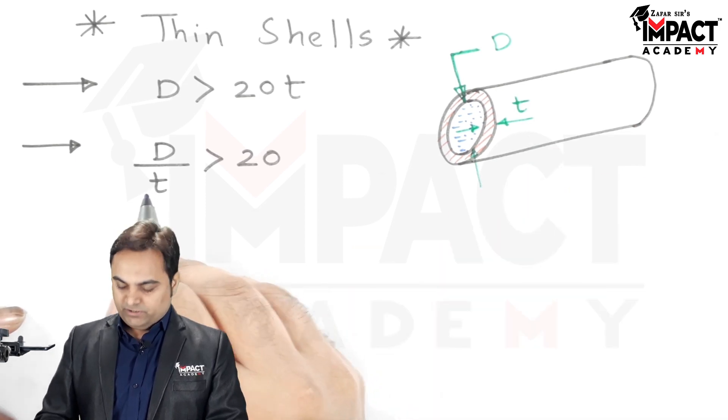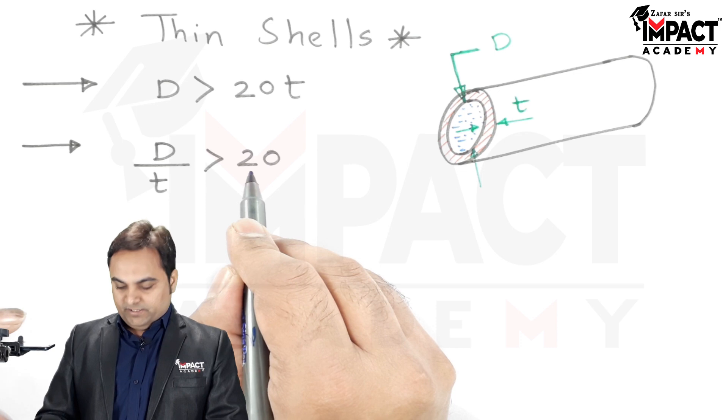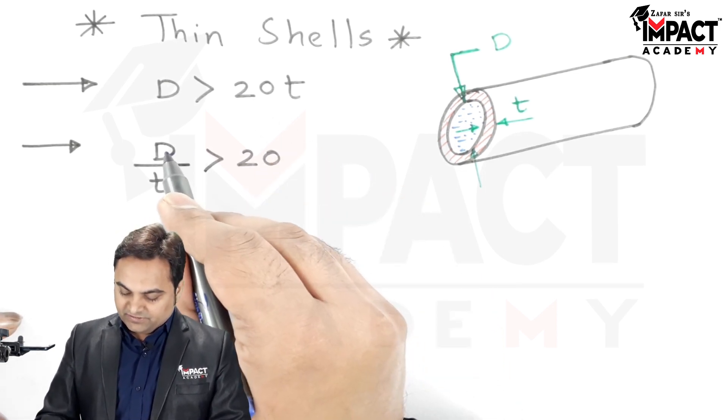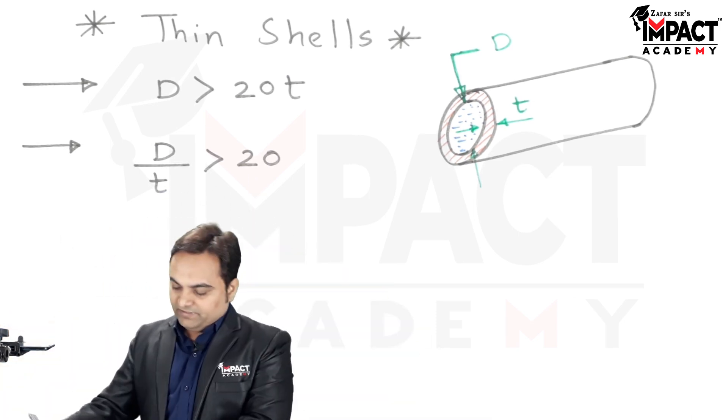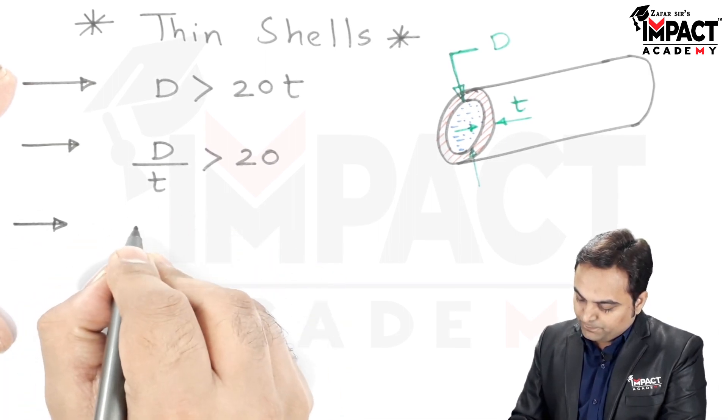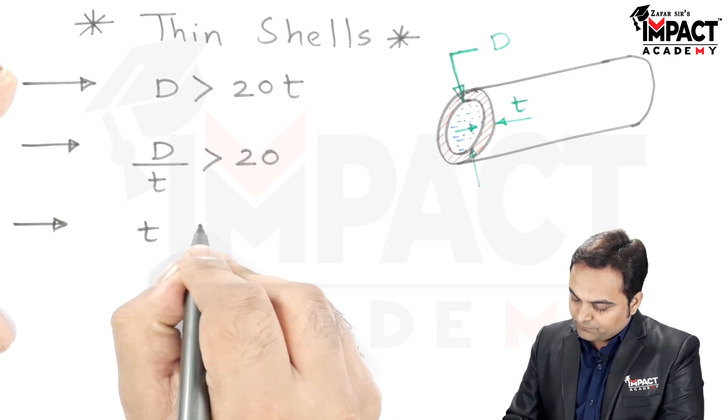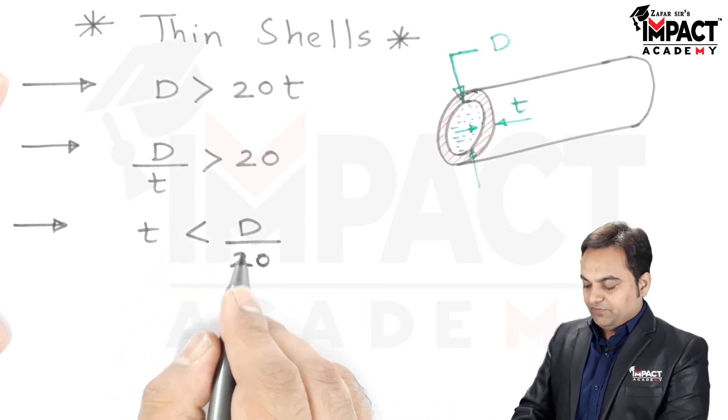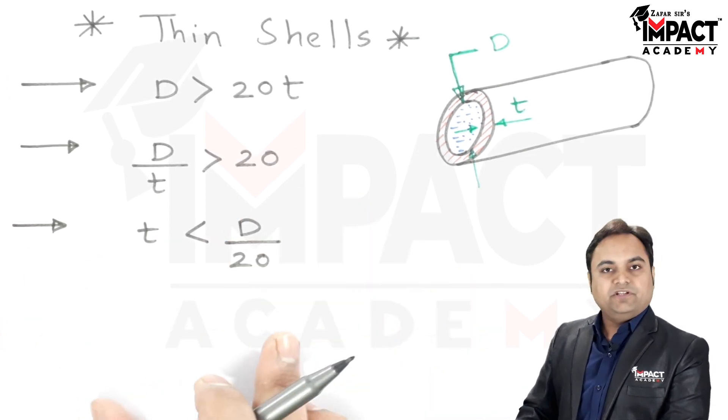They are almost the same, and the reason being that the thickness is quite less here. As I have shown, the diameter by thickness ratio is greater than 20. In other words, we can say that the thickness is diameter divided by 20. Therefore, the thickness would be less than the internal diameter divided by 20. That is the definition regarding thin shells.